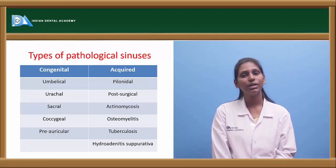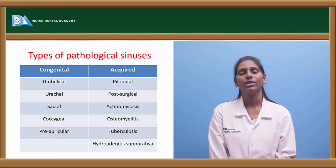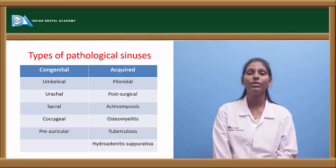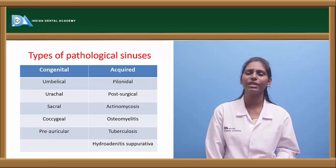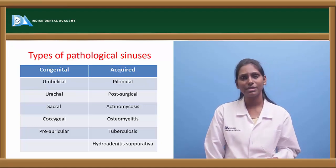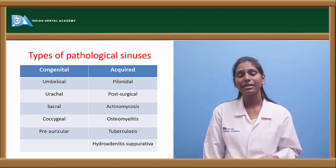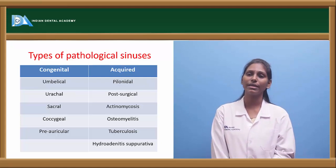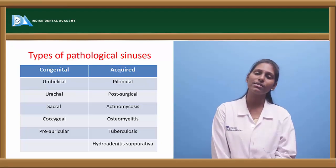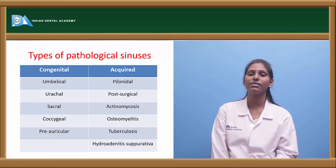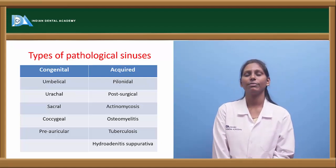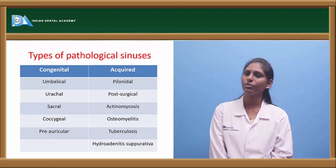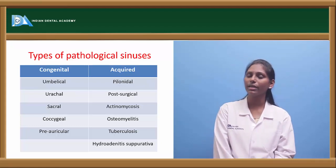In urachal sinus, complete excision of the sinus is the only treatment. Pre-auricular sinuses are one of the most commonly encountered types — they can be either unilateral or bilateral. We can leave them if there is no impending problem; however, if they are secondarily infected, pre-auricular sinus removal has to be done.